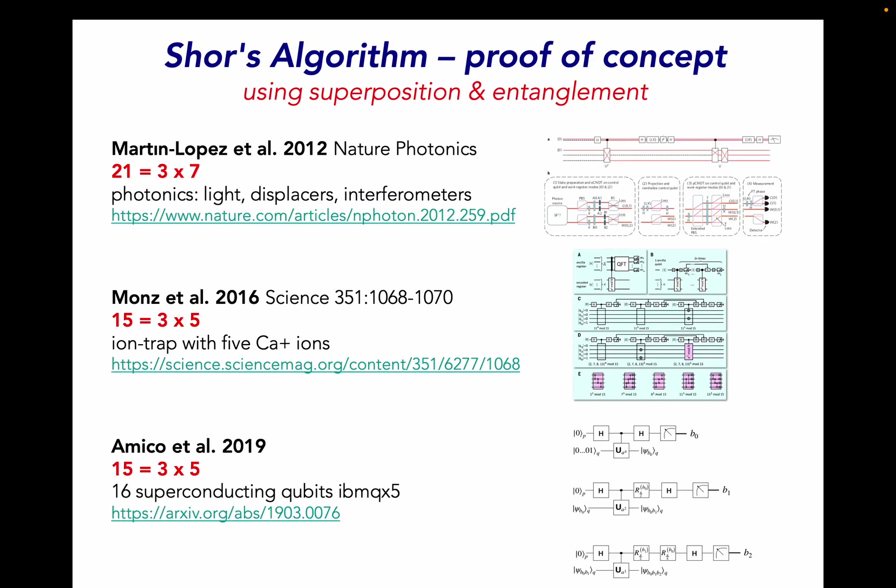In fact, this has been implemented on real quantum computers. It's been implemented on devices that use photonics or light. It's been implemented using computers that use calcium ions with an electron moving between different energies and on superconducting oscillator qubits. The amount of things they factored are relatively small numbers, 15 and 21. But these are relatively small quantum computers. This is a proof of concept and presumably could be scaled up to factoring much larger numbers.